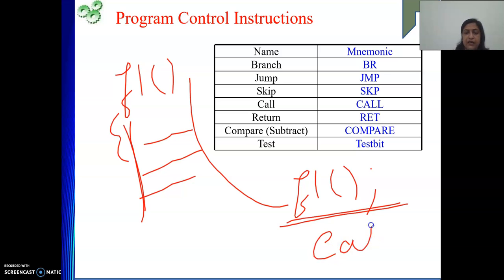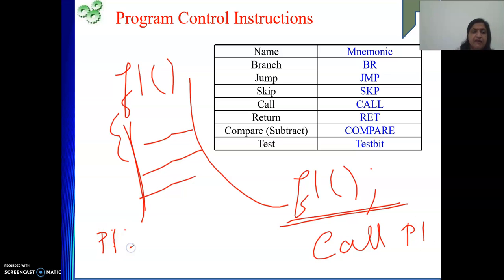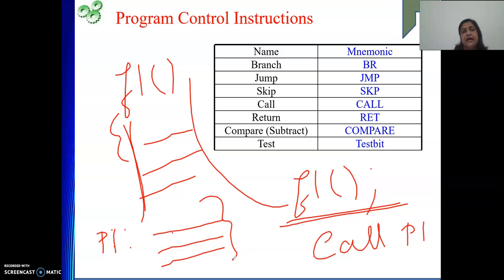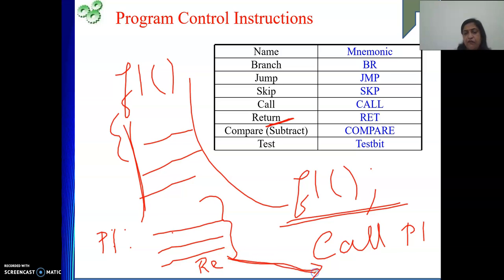So we write CALL followed by the name of the function — here the name means the address of the first instruction of your function. For example, CALL P1, where P1 is the label of the first instruction of my subroutine. The subroutine code there will be executed. For return: whenever we execute the return instruction inside the function, our control comes back to the next statement following the call instruction — back to the caller.